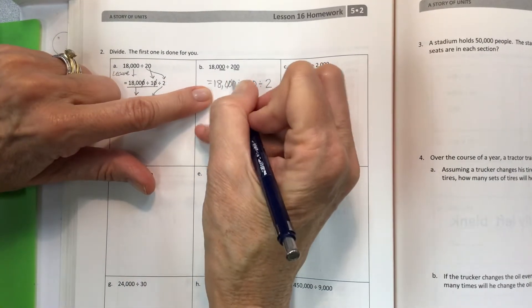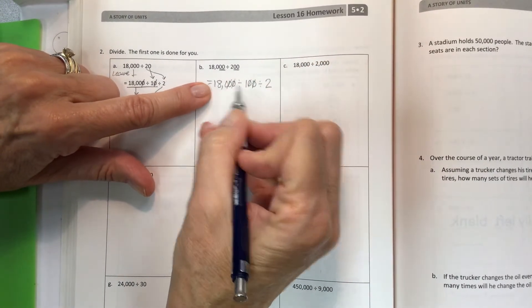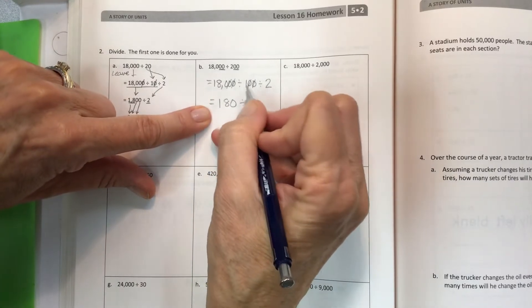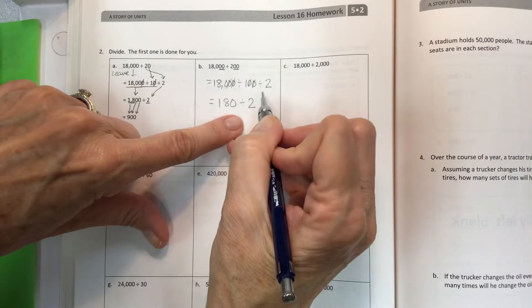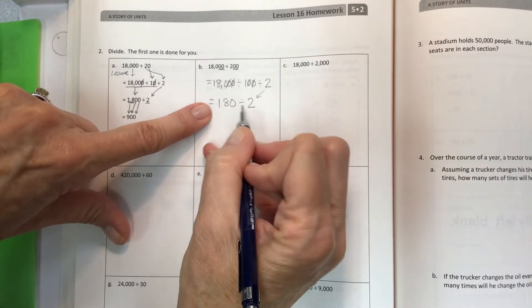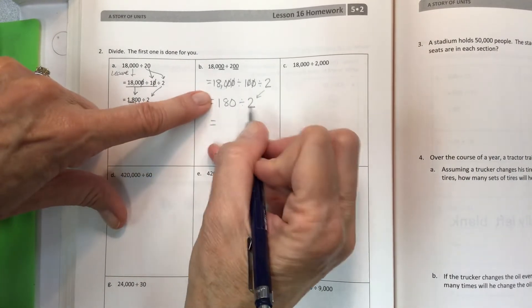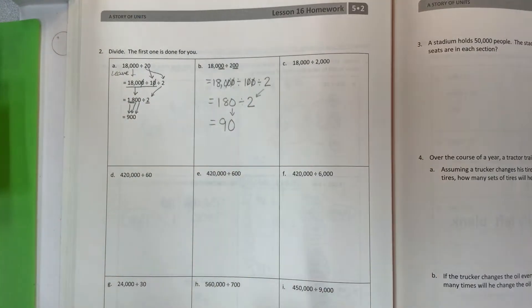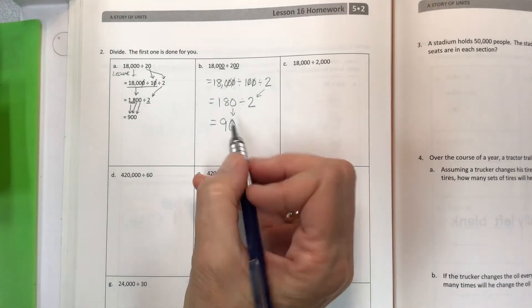Since we have two zeros, we can slash those out, which leaves us with 180. We've done that, so bring down your 2. Now that I have 180 divided by 2, you know that 18 divided by 2 is 9, and you're going to bring down that other zero. So our answer is 90.